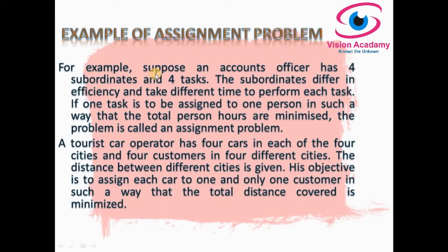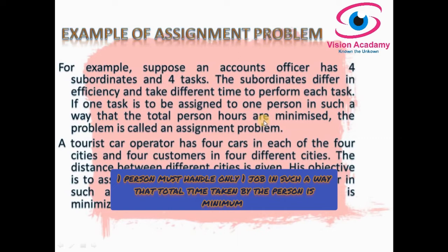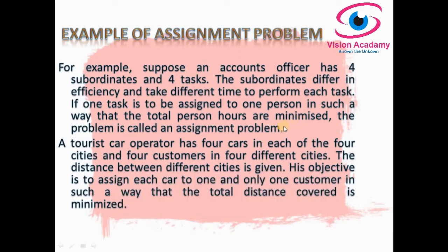Let us look at an example. Suppose an accounts officer has four subordinates and four tasks. The subordinates differ in efficiency and take different time to perform each task. The manager has to assign one task to one person in such a way that the total person-hours is minimized. One person must be assigned one job so that the total hours taken by the subordinates is minimized. This type of problem is called an assignment problem.